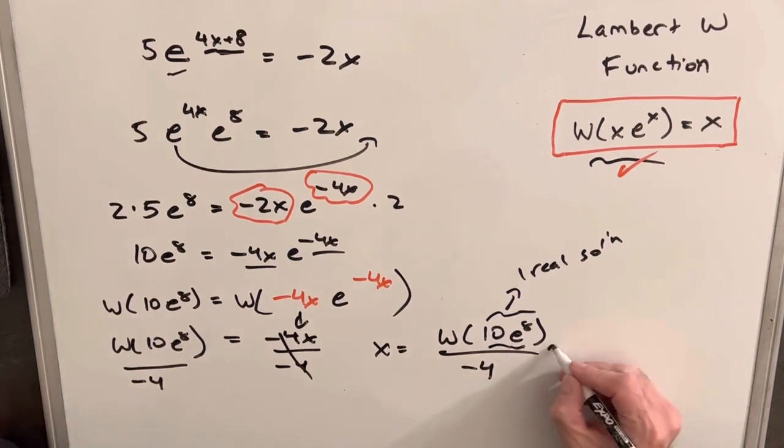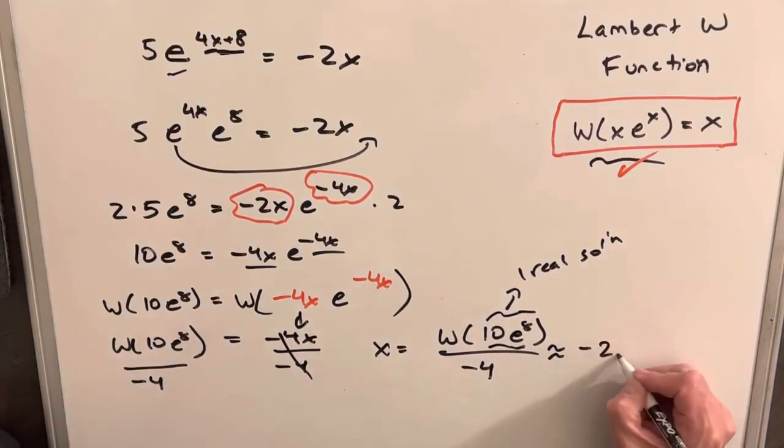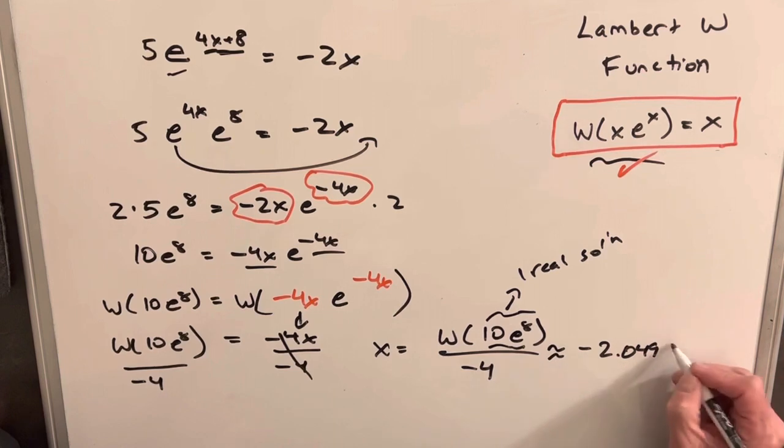So I plugged this into Wolfram Alpha to get an approximate answer, and I got minus 2.04965 and more decimal places.